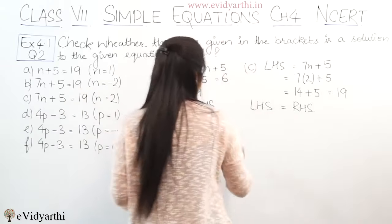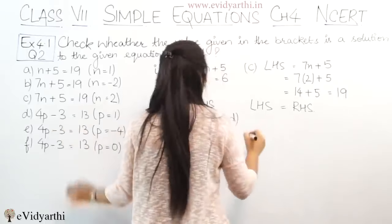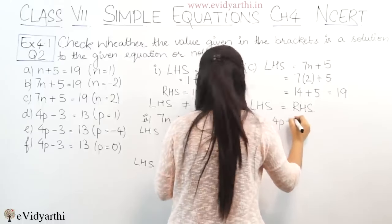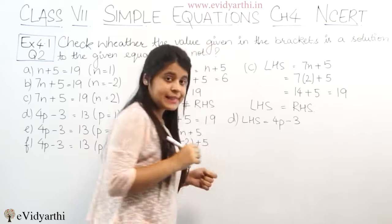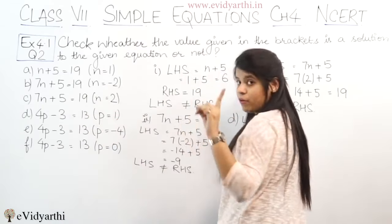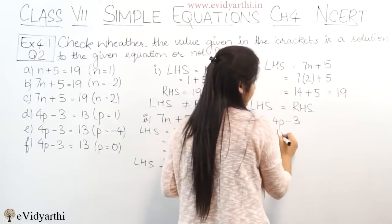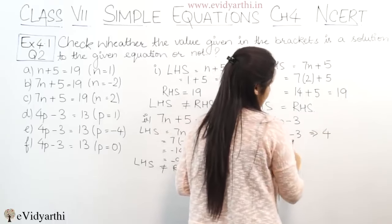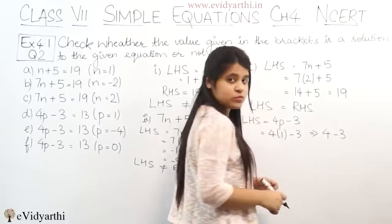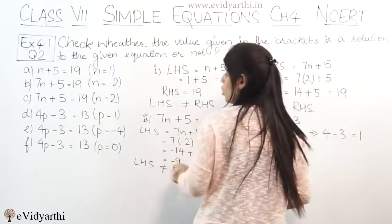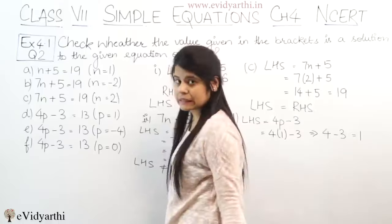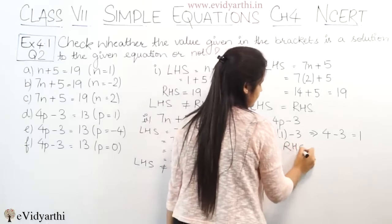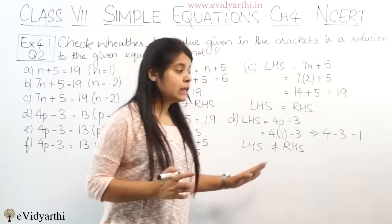Now let's come to part D. In part D the left hand side is 4p minus 3, and the value of p given is 1. Putting p = 1: 4 into 1 minus 3 gives 4 minus 3, which equals 1. And what is the RHS? It is 13. So again, left hand side is not equal to right hand side.